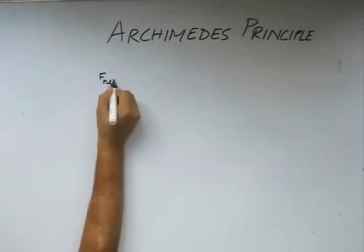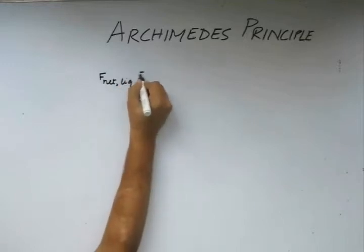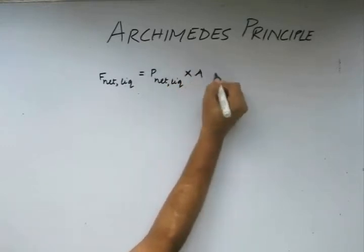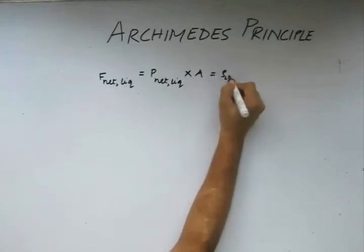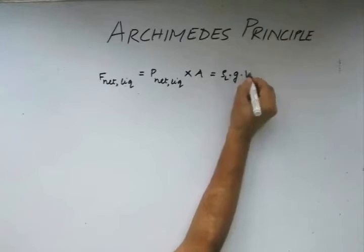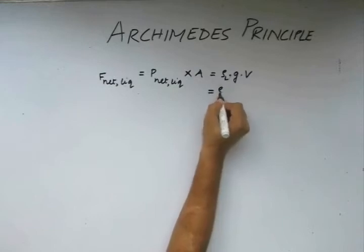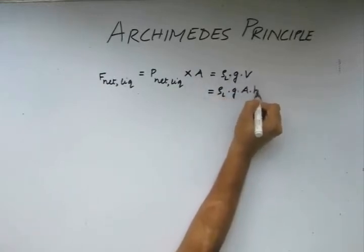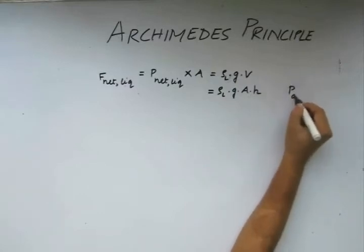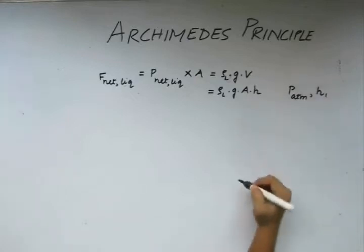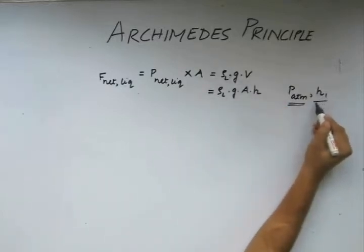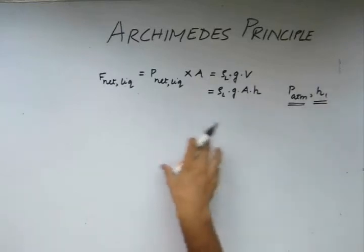What we got was this quantity. We can also write it as this. If we note that this quantity is basically independent of some other terms we took into consideration — this quantity is independent of the atmospheric pressure, and this quantity is also independent of the height or the depth at which the body is lying or submerged in the fluid we are considering.